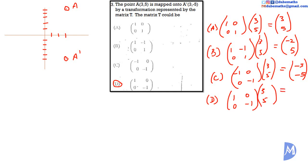For D: 1×3 added to 0×5 equals 3, and 0×3 added to -1×5 equals -5. So the matrix (1, 0; 0, -1) maps (3, 5) onto (3, -5). As we said before, the answer is D.